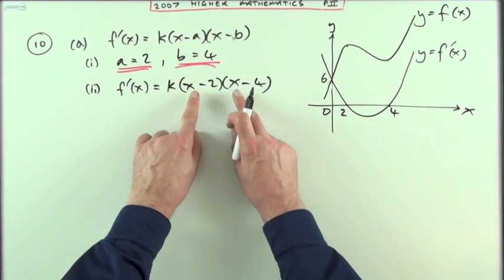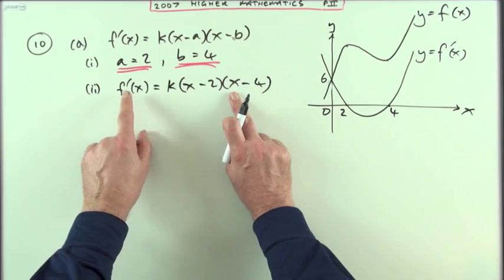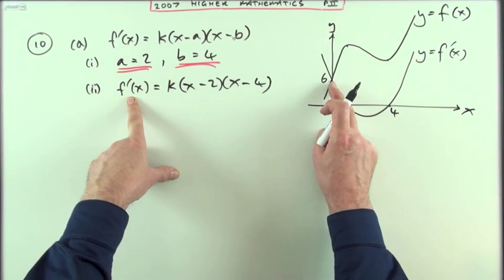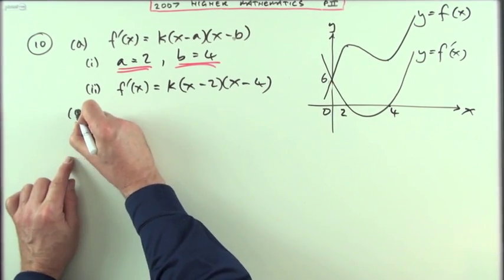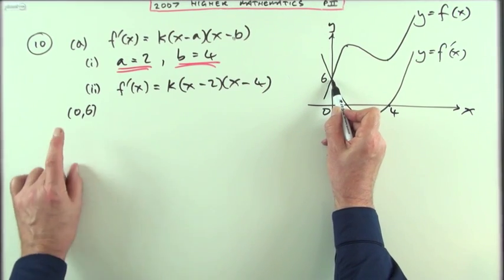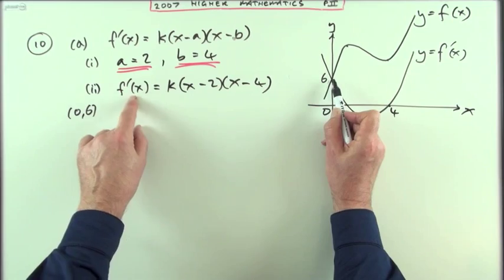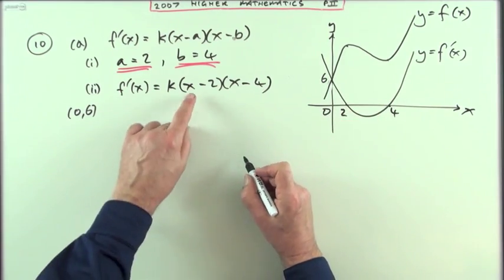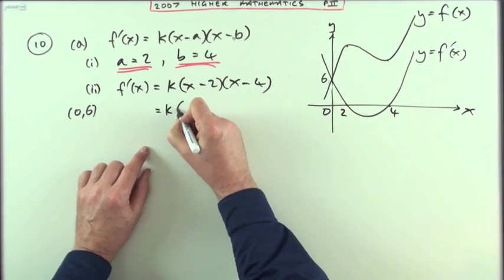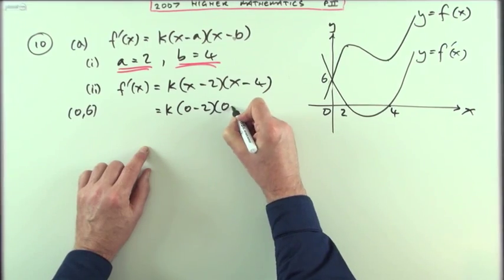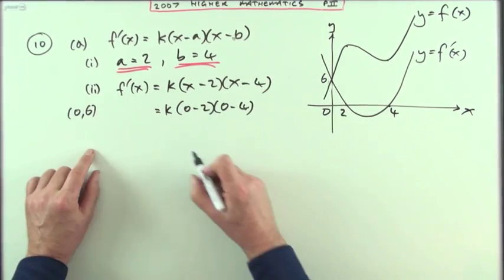Now to find k that means I'll need values for x and for the answer f' which is plotted here as six. So since it goes through that point zero six that means when x is zero the answer will be six.